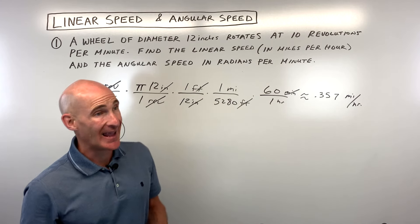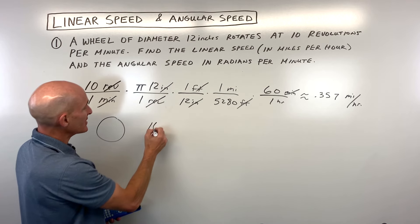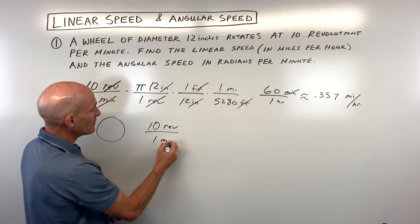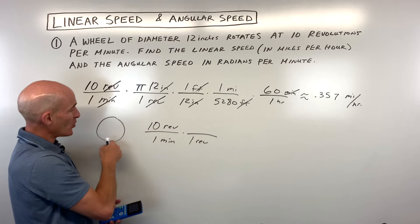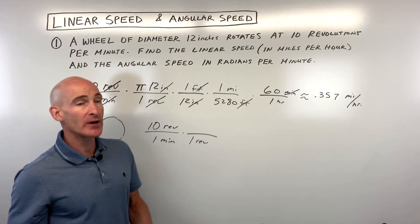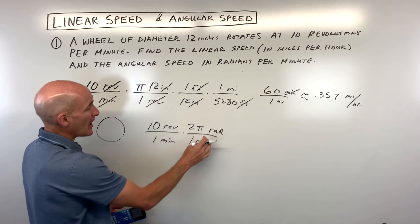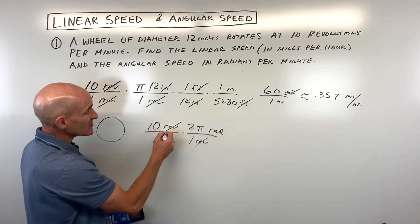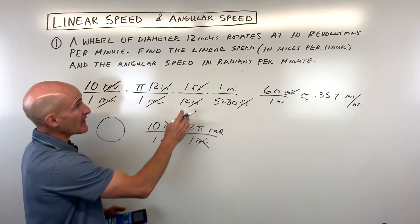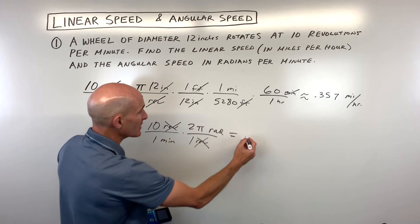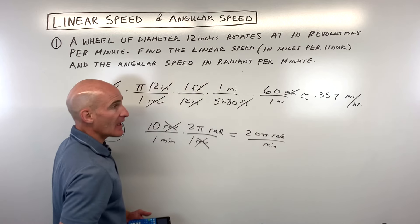Now for the angular speed — that's the second part. I'd go back to 10 revolutions per minute. We know that for every one revolution — once around — that's 360 degrees, or equivalently 2 pi radians, as you know from the unit circle. So we multiply by 2 pi radians per one revolution. The revolutions cancel, and we're left with radians per minute, which is what we want. Multiplying across gives us 20 pi radians per minute.